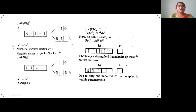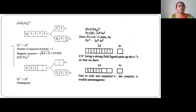For Fe(H2O), water is a weak field ligand. Fe has atomic number 26 with electronic configuration 3d⁶4s². With an oxidation state of +2, there are 6 electrons in the d orbital. The first three electrons go to t2g, the next two go to eg, and the last electron pairs with t2g. The total number of lone pairs of electrons is four, because with a weak field ligand the electrons go to eg rather than pairing up.